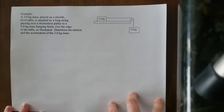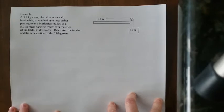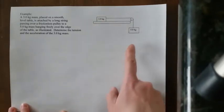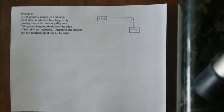First thing we do when we solve these questions is we're going to draw a free body diagram for both masses. We have a three kilogram mass and a five kilogram mass. So let's start.